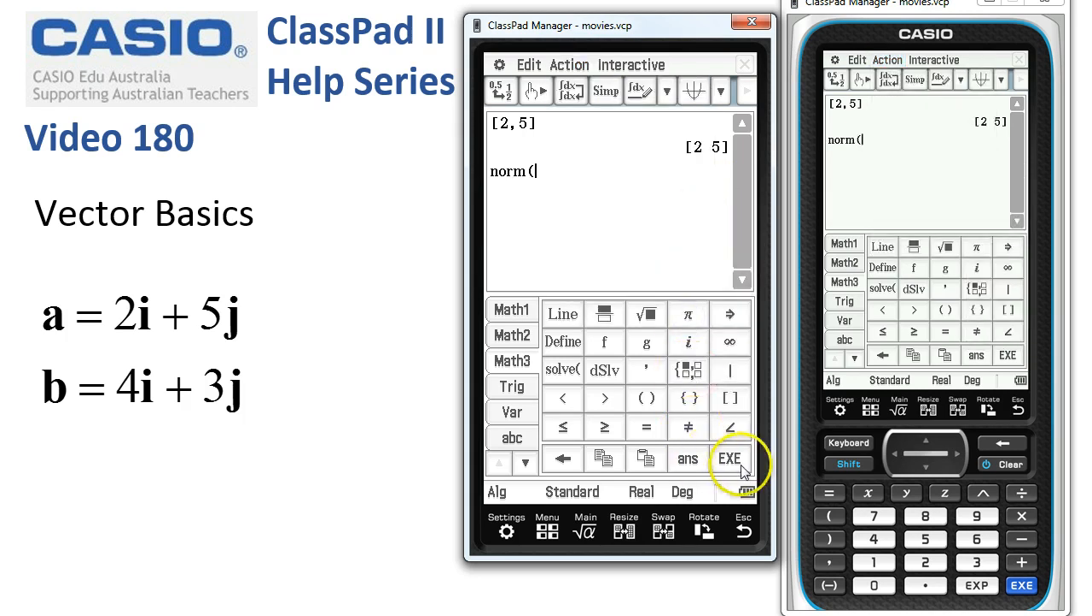And then we can do all sorts of things with it using the action vector menu. You notice there's all the common commands that we might want to do with a vector here. So maybe the first one is find its magnitude norm and when we tap execute there it is, it's root 29.